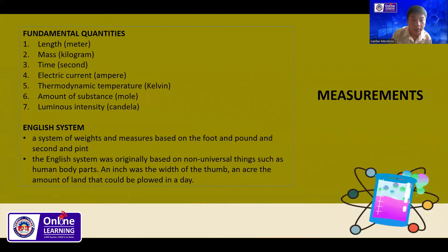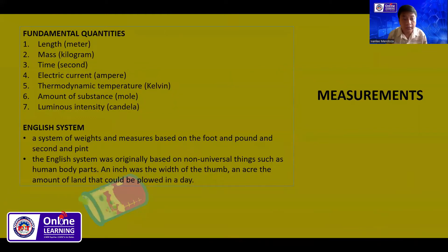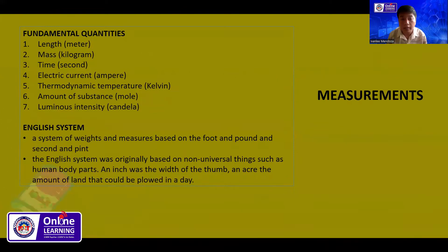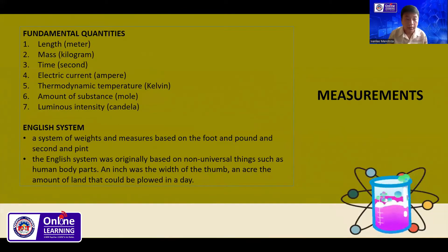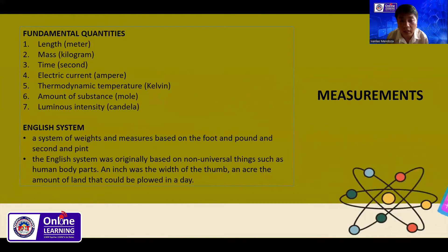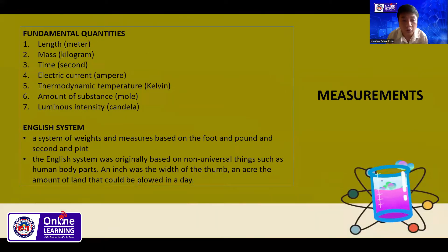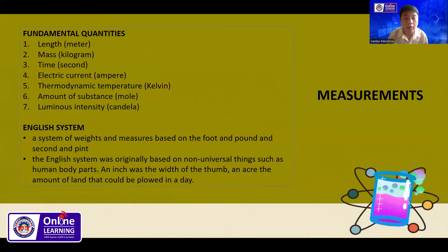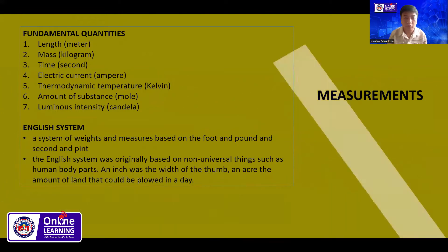Another system is what we call the English system — a system of weights and measures based on the foot, pound, and second. The English system was originally based on non-universal things such as human body parts. For example, an inch was the width of the thumb, and an acre was the amount of land that could be plowed in a day.